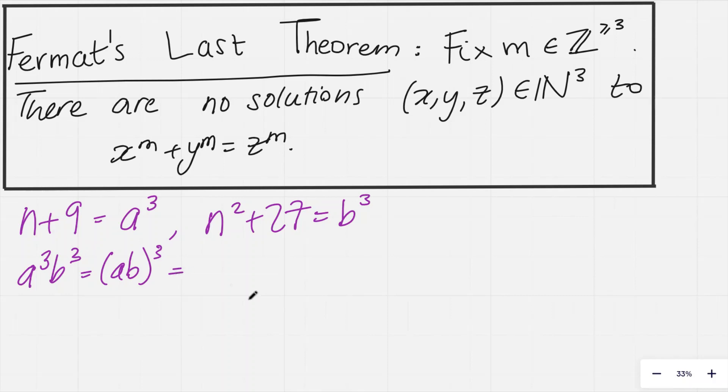But then if I write this as n plus 9 times n squared plus 27, and just expand the brackets, this n squared times n is n cubed. This n squared times 9 is 9n squared. This n times 27 is 27n, and then 9 times 27 is 243.